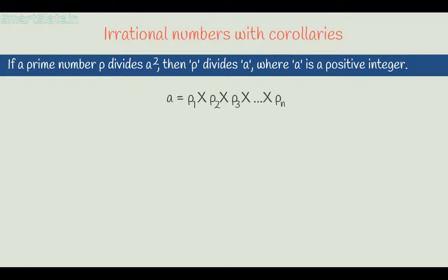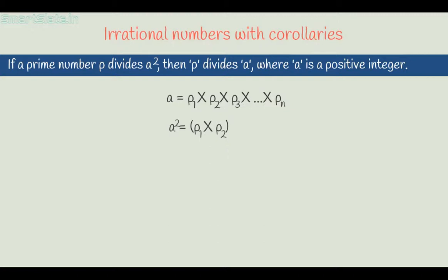Let every product of prime factors be p1, p2, p3, and so on up to pn. Squaring both sides, we get a squared equal to p1 times p2 times so on up to pn, all squared. So we get a squared equal to p1 squared times p2 squared and so on up to pn squared.